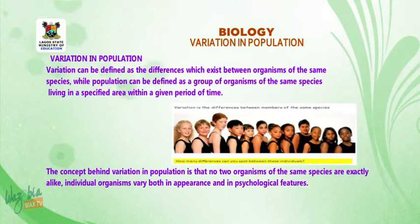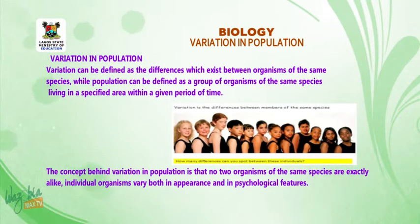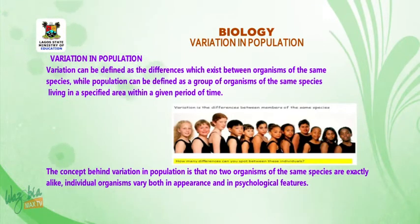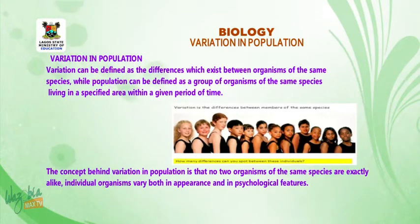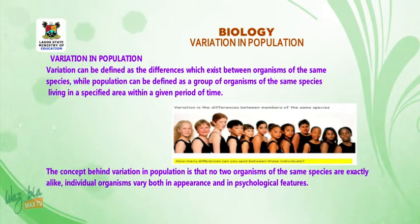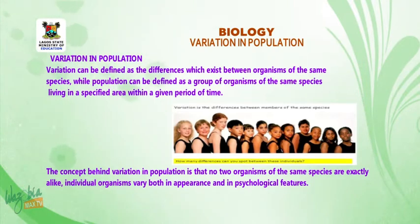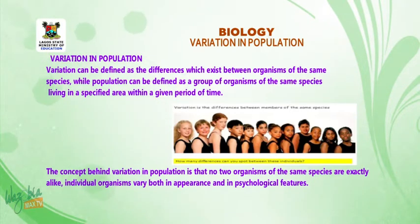Variation in population. Variation can be defined as the differences which exist between organisms of the same species, while population can be defined as a group of organisms of the same species living in a specified area within a given period of time. The concept behind variation in population is that no two organisms of the same species are exactly alike. Individual organisms vary both in appearance and in physiological features.